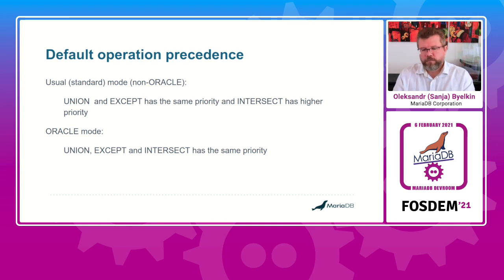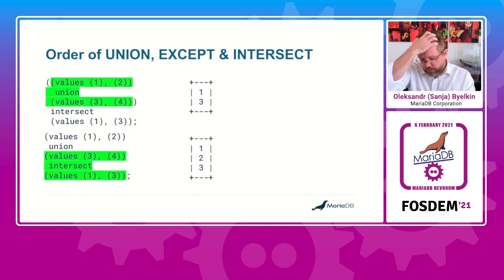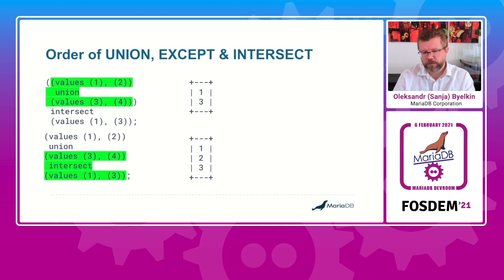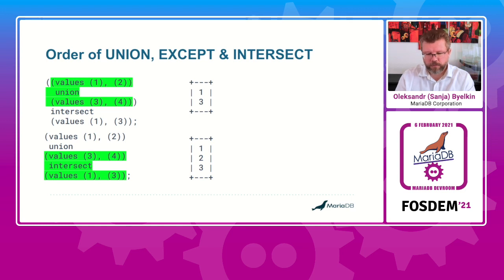In Oracle, and in MariaDB's Oracle mode, UNION, EXCEPT, and INTERSECT all have the same priority, so they execute in the order they appear in the query. The result really depends on execution order. For example, if we first make a UNION the result will be 1, 2, 3, 4, and then intersect with 1, 3 — we get 1, 3. But if INTERSECT executes first according to the standard rules, you get 3, 4 INTERSECT 1, 3, which gives 3, then UNION with 1, 2 — the final result is 1, 2, 3.